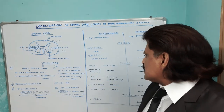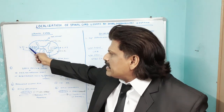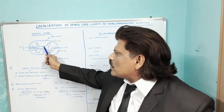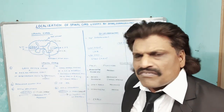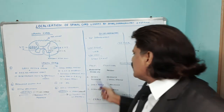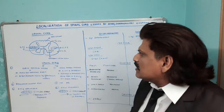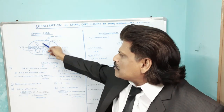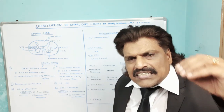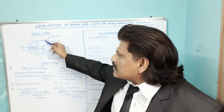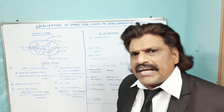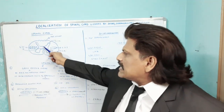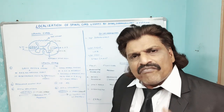Regarding sacral sensations: because of lamination, sacral fibers are placed laterally. So in an extramedullary lesion, sacral sensory loss occurs first, whereas in an intramedullary lesion there is sacral sparing. The posterior column carrying joint sense and vibrations is in the white matter. So extramedullary lesions affect the posterior column first, whereas intramedullary lesions affect the inner gray matter, sparing the posterior column until late.